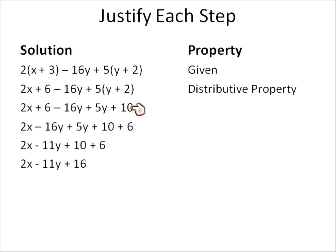The next step here, we actually distributed again. None of the first bunch changed. But we distributed the 5 times y and 5 times 2 from this step to this step. And so we would say, again, we used the distributive property.